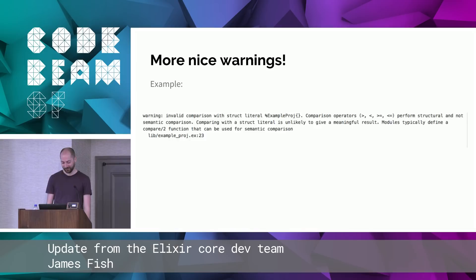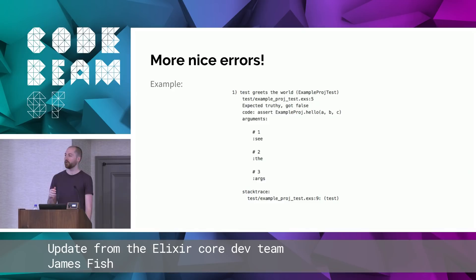We've also got nice errors in ExUnit. If you have an assertion and you have variables passed to a function call, we will show what those variables are in the assertion error.